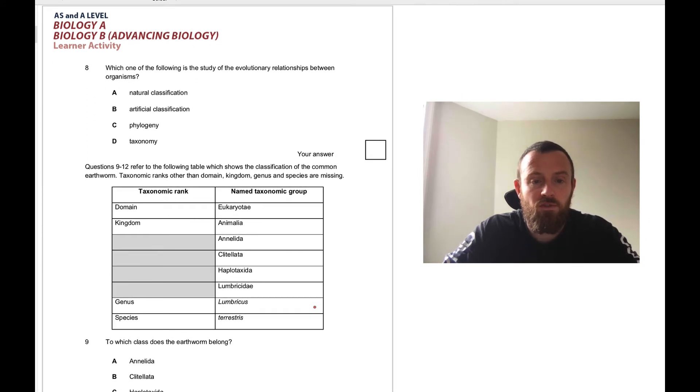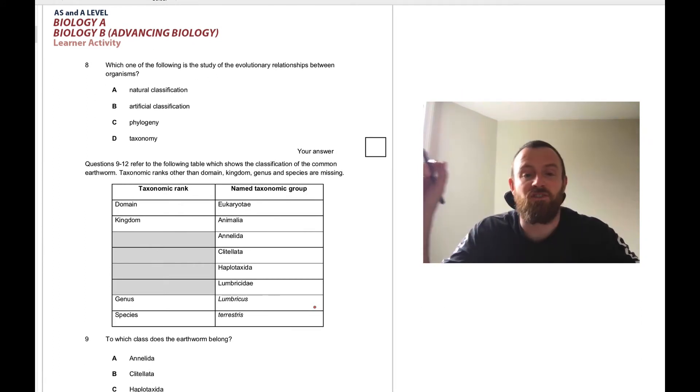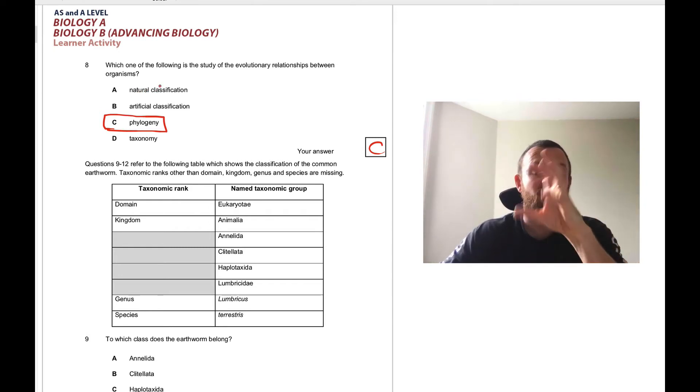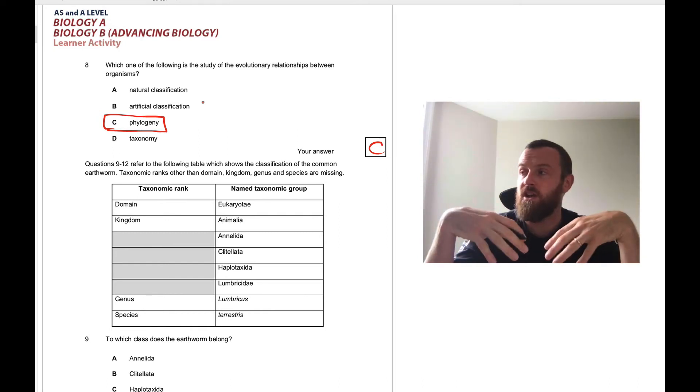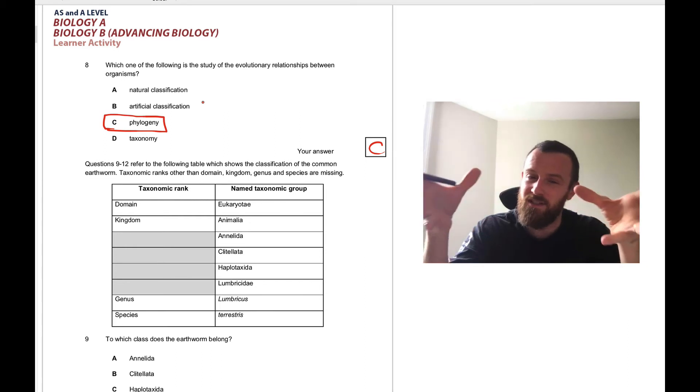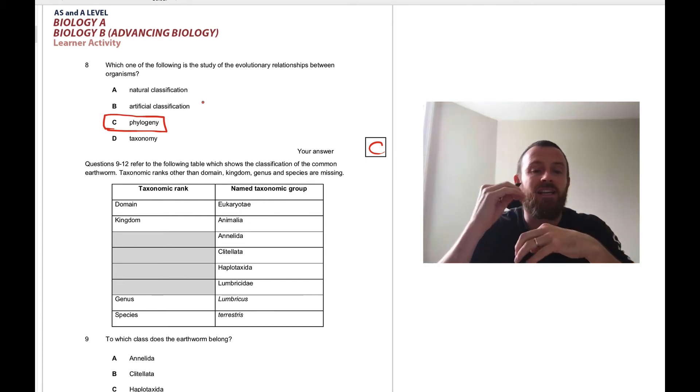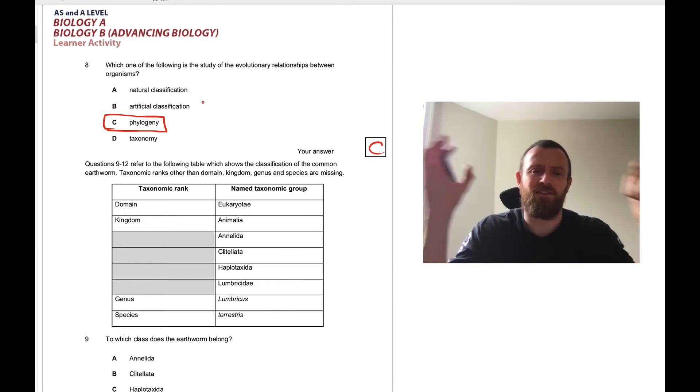Which of the following is the study of the evolutionary relations between organisms? This is called phylogeny. Natural classification means classifying species according to their phylogenetic relationships. Artificial classification is classifying species according to features that are sort of obvious on the surface, their appearance and shape, their anatomy. Taxonomy is similar to artificial classification. Phylogeny is the relationships.